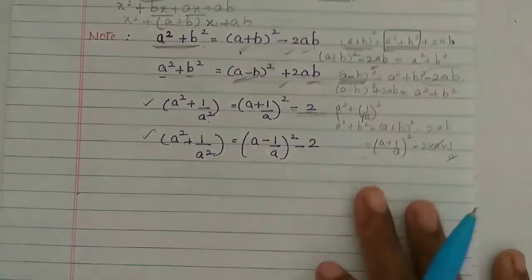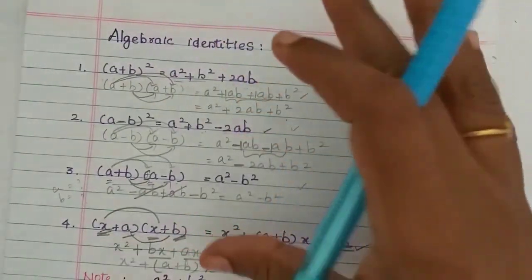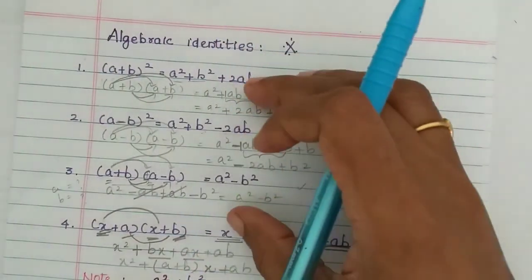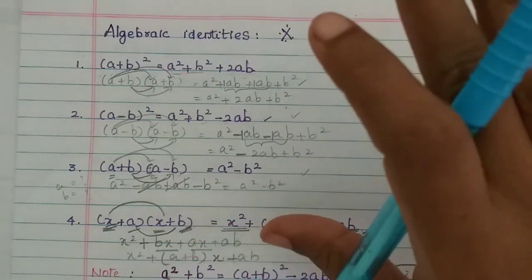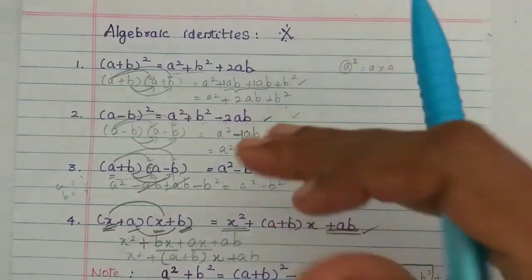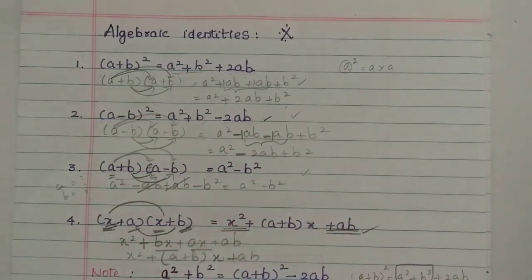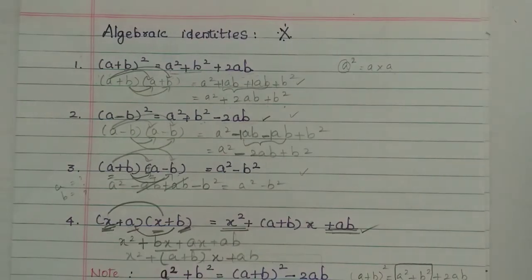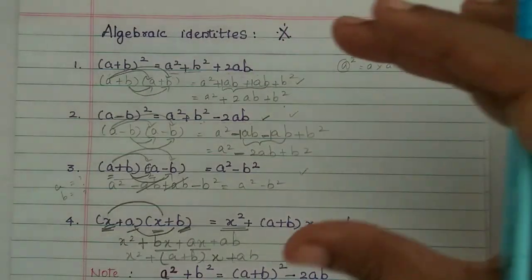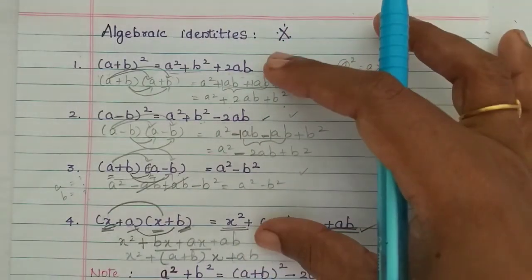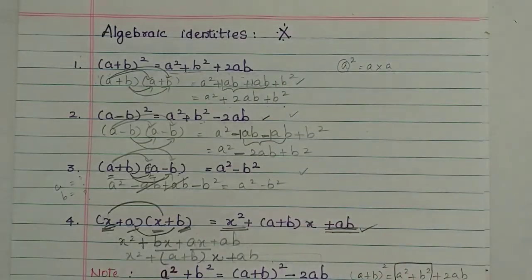So the first four identities are used — they are used continuously in 10th, 11th, and 12th. Let's memorize these. That's all. Thank you.